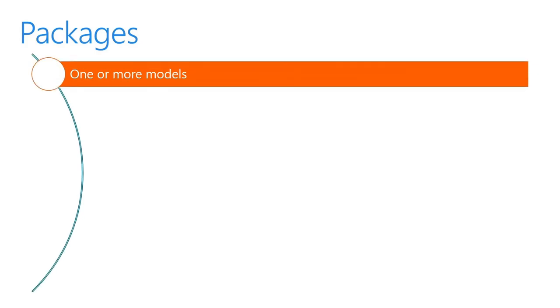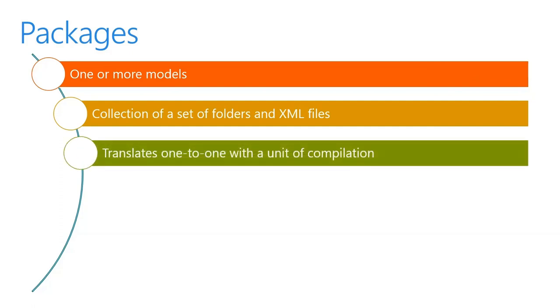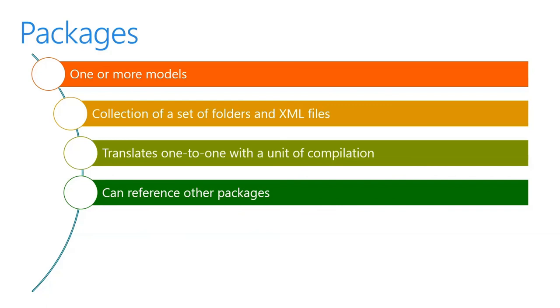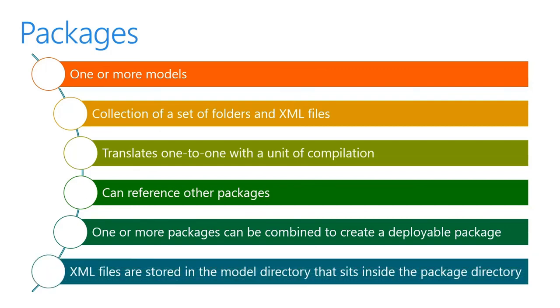Let's now take a moment to review packages. A package is an independent individual set of layers and models. It can contain one or more models. It's also a set of folders that consists of XML files representing the elements in the system — in this way, a package can be viewed as a mini model store. A package translates directly to a unit of compilation, which is an assembly or DLL file. Packages can reference other packages, similar to how .NET assemblies can reference each other. When a package references another package, it can access the models and elements within the referenced packages — this is the basis for how the extension framework will function. One or more packages can be combined to create a deployable package. XML files are stored in the model directory that sits inside the package directory.